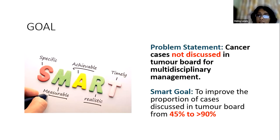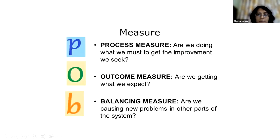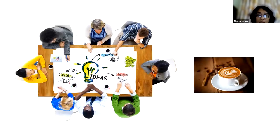Currently at our institution, as part of the quality hub, we are looking at cases discussed in our tumor board. We felt that cases were not being discussed despite multiple tumor boards being available. We set a goal: our baseline was around 40 percent and we wish to make it up to 90 percent. There are various measures to set — process measures, outcome measures, and balancing measures.